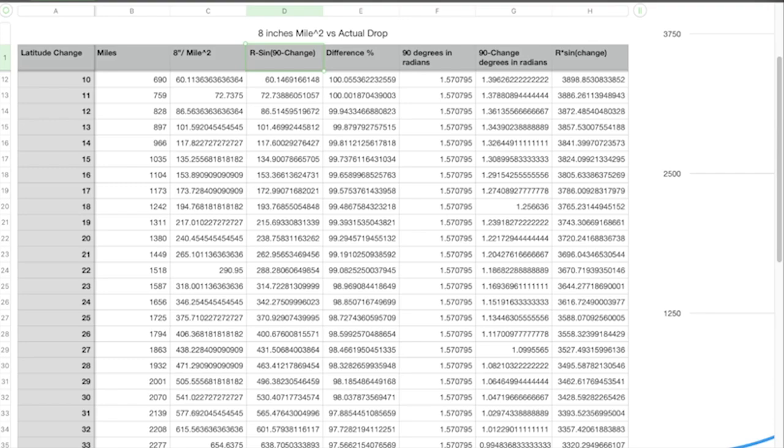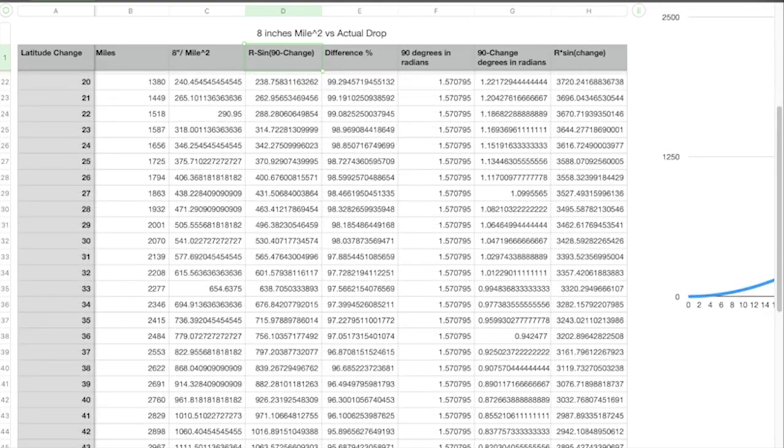20 degrees is the example that we use for 1,380 miles. It's 240.45 miles versus 238.76 miles. That's less than two miles difference on a total drop of 240 miles. So I don't know about you, but I find this rather surprising. That's a pretty doggone good estimate. How far out can we take it?